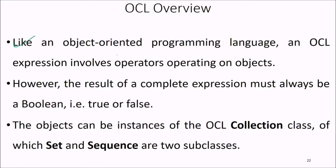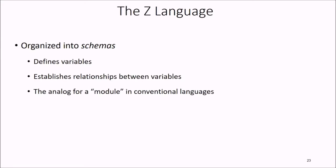Like an object-oriented programming language, an OCL expression involves operators operating on an object, but the result of the complete expression must always be Boolean (true or false). Objects can be instances of OCL collection classes, of which set and sequence are two subclasses. The Z language is organized into schemas, which define variables and establish relationships between those variables — analogous to modules in conventional languages.